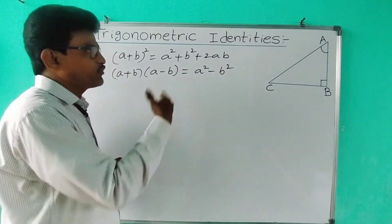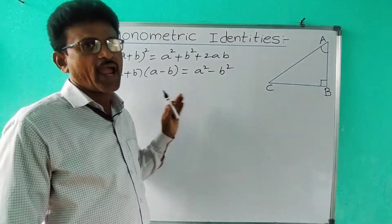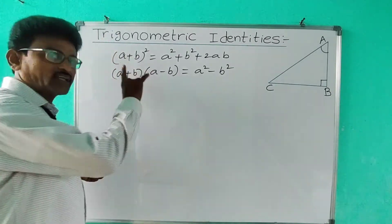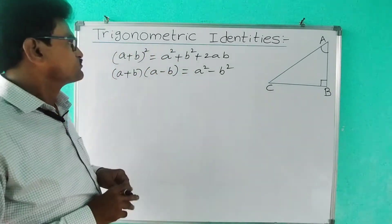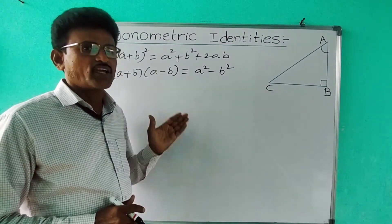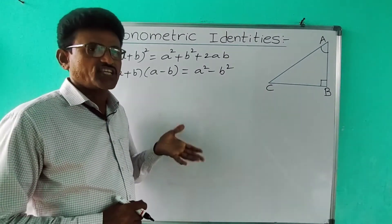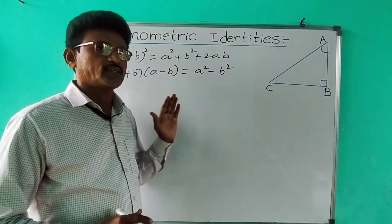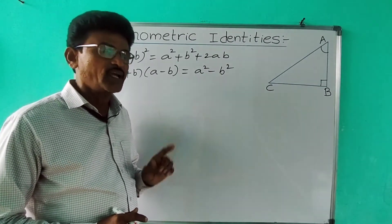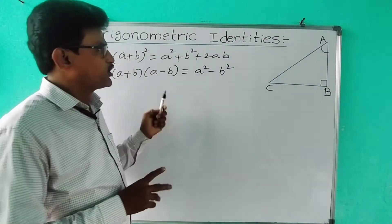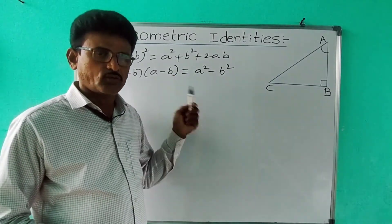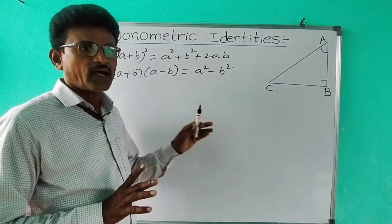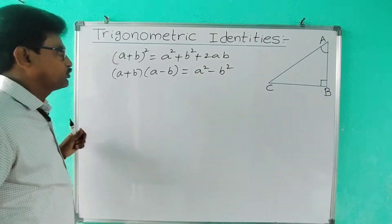If we use trigonometric ratios of angles in an equation, they are said to be trigonometric identities. A mathematical equation which is true for all values of variables in the equation is called an identity, and if we use trigonometric ratios in the equation, they are called trigonometric identities.